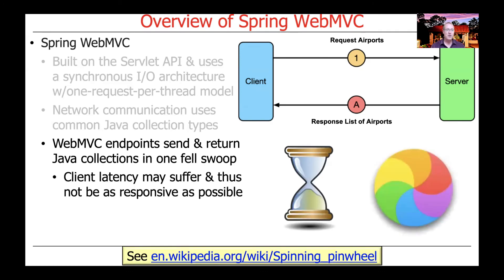As a consequence, if you had lots of airports being returned, the latency on the client side could suffer because you have to wait for the server to pack all those elements into the list and send it back in one big chunk. You may end up with a longer delay than you'd like, especially when you could start displaying data to the client while the rest is still being downloaded from the server asynchronously — which we'll talk about shortly. You could end up with the dreaded spinning pinwheel or hourglass.